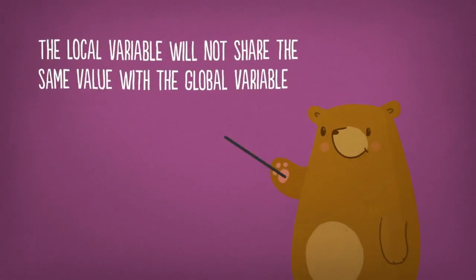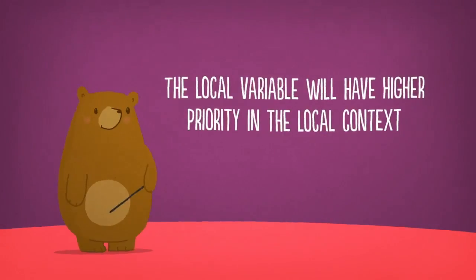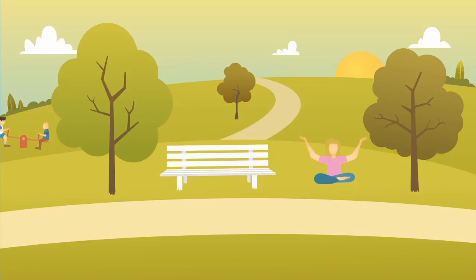I'm glad that you asked. Well, the local variable will not share the same value with the global one, and it has nothing to do with the global variable. The local variable will have more priority in the local context. To make it easier to understand, think of global scope as a public place.